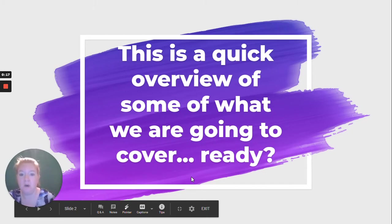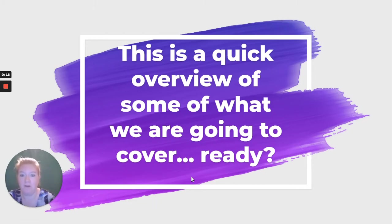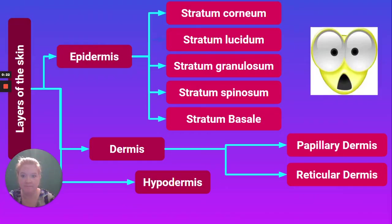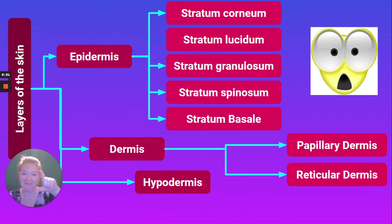Here is a quick overview of some of the things we're going to cover today. So what are we going to cover? Epidermis, dermis, hypodermis, layers of the epidermis, layers of the dermis. Hypodermis doesn't have any layers, so just the hypodermis.